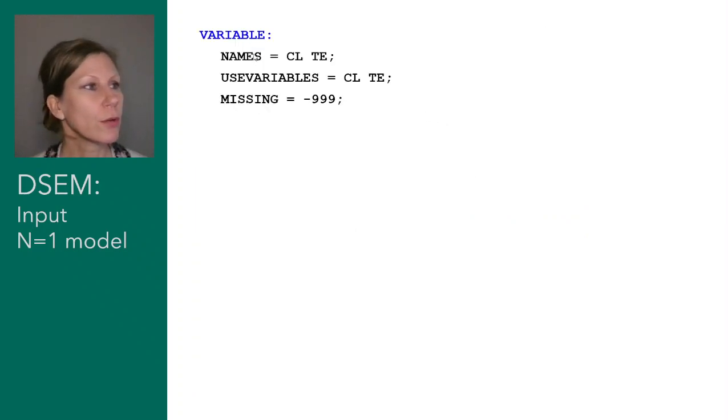When we move to the code and we look at the variable commands, this is where we have to indicate the names of the variables, and they have to be indicated here in the order in which the variables appear in the data file. So the first one is closeness and the second one is tension.